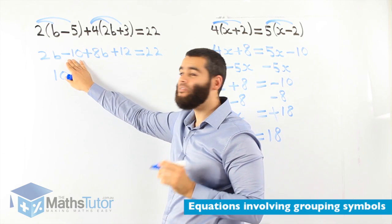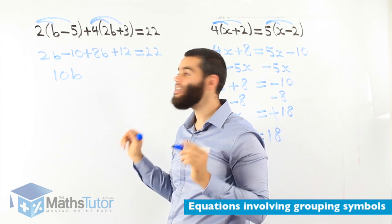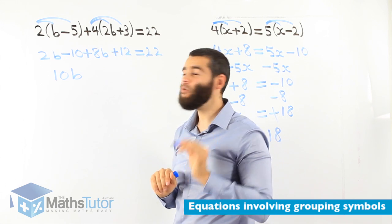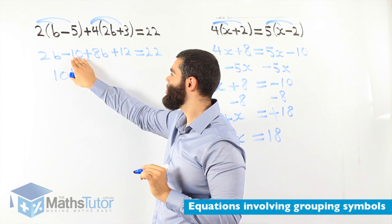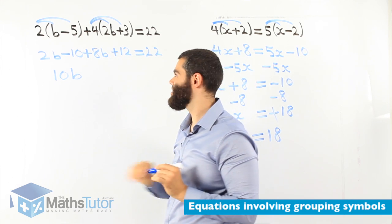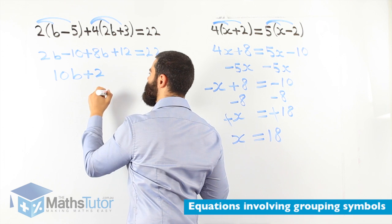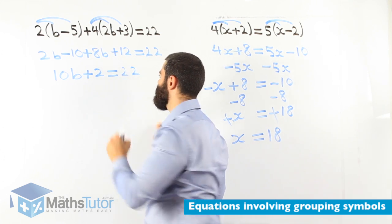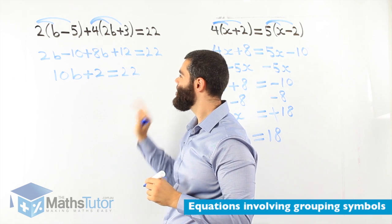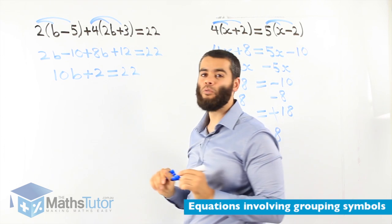Now, negative 10 has another like term. There it is. Negative 10 plus 12. You notice here, we are not saying 10 plus 12, we are saying negative 10 plus 12. I have seen too many students, they stuff up. Why? Because they say 10 plus 12. No, it is negative 10 plus 12. It is a total different answer. So, negative 10 plus 12 is positive 2, equals to 22. Very easy to make mistakes in these little simple processes here. So, it is very important that you pay attention and you be careful. 10b plus 2 equals to 22.